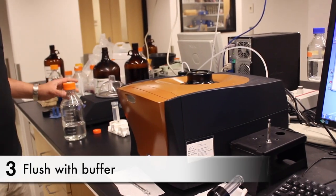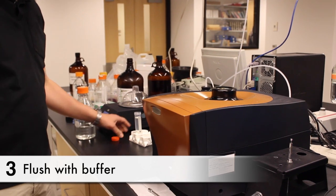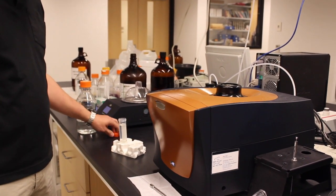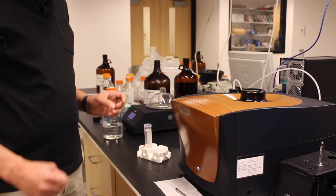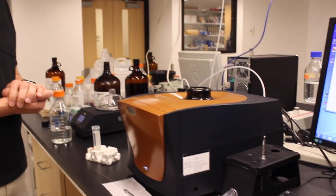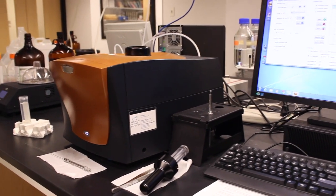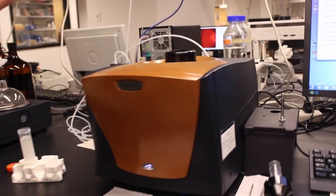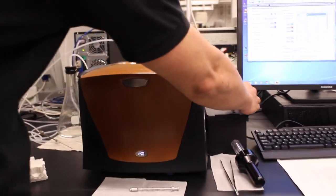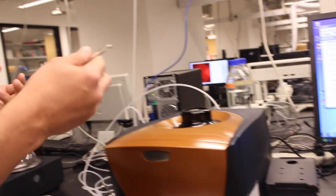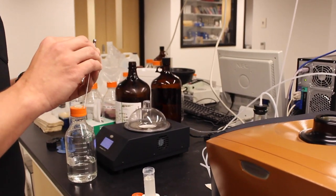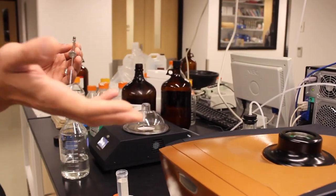The next step will be to flush the cell with the buffer that you're using for your experiment. It's very important for every part of the system to be equilibrated and flushed with the same buffer. That includes the cell and the syringe because what you want is for the only difference between the cell